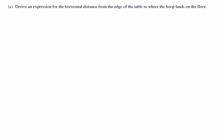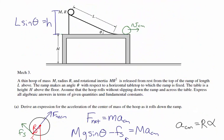In part C, the hoop rolls off the table, and we need to derive an expression for the horizontal distance from the edge of the table to where the hoop lands on the floor. As it rolls off the edge, because the table is horizontal, that velocity is only in the x-direction. It becomes a projectile and lands some distance D in the horizontal direction — that's what we're solving for. We'll look at the motion in the x and y directions using projectile motion.